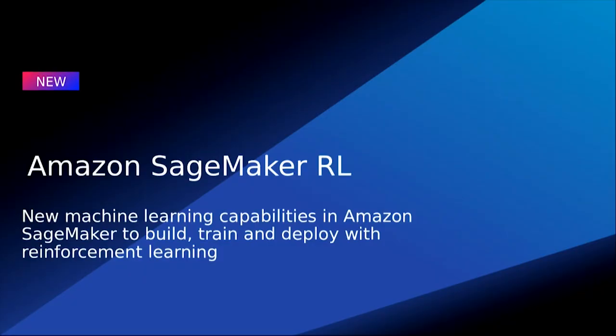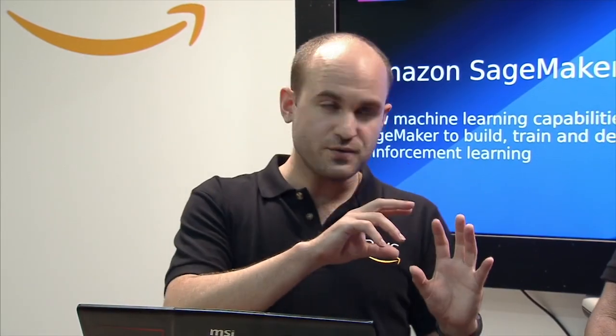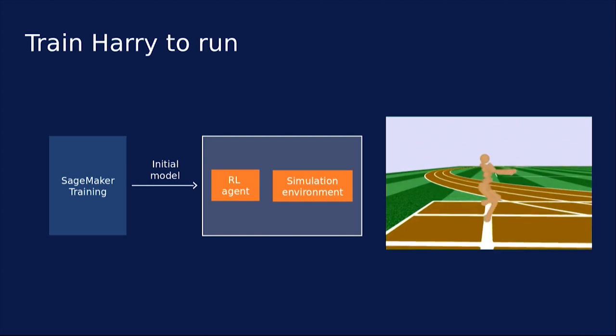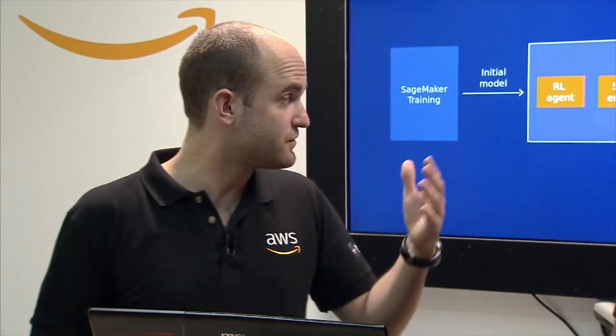I figured — wouldn't it be great to teach a machine to learn how to run without ever explaining how legs work? Reinforcement learning is an interesting scenario for this, using Amazon SageMaker's reinforcement learning feature. This is a new feature launched last year at re:Invent — it provides the simulation environment and the scoring system, all integrated into SageMaker. We used this to train 'Harry,' our little stickman, to run. In the first iteration, Harry just folds down — he doesn't know what to do with those limbs at all.